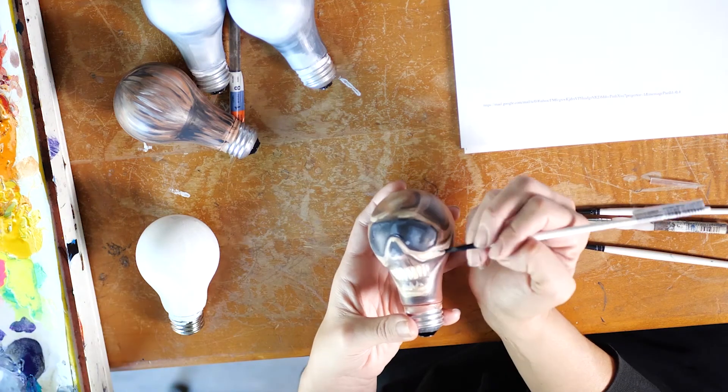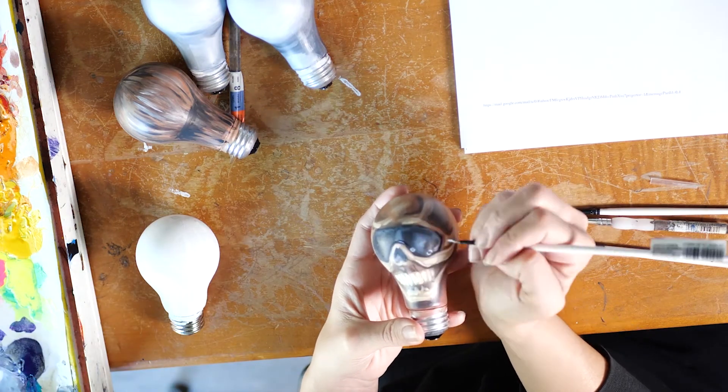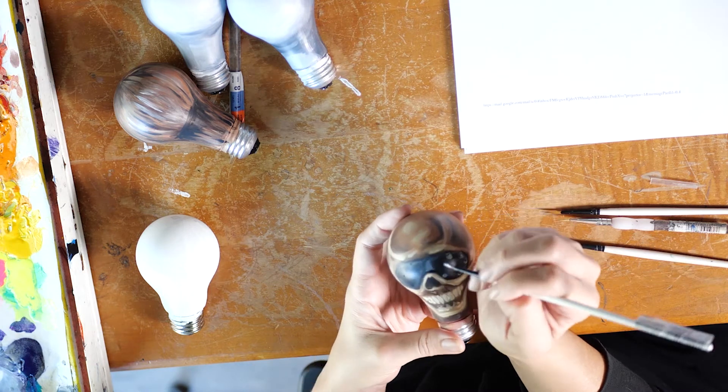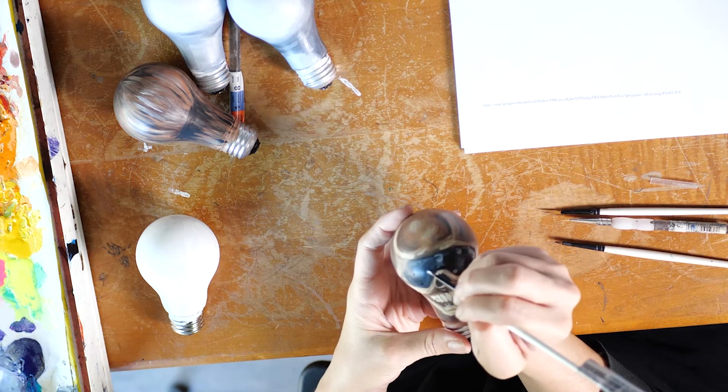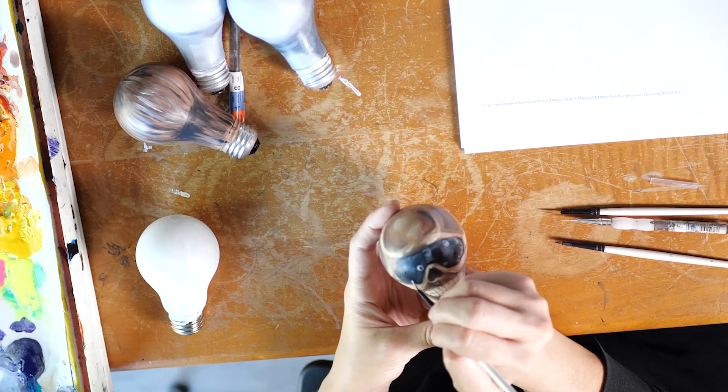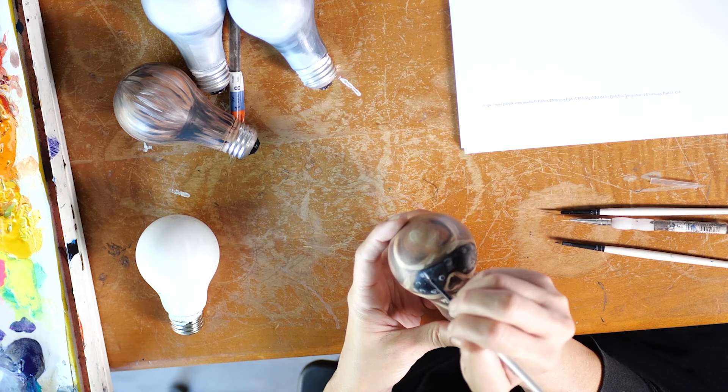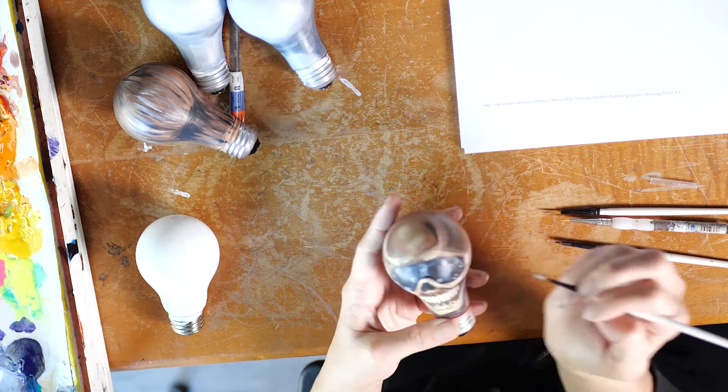Now I'm putting little tiny circles using a liner brush for the dots where the rivets are holding this piece onto his forehead. And I gave a little extra white highlight right along where the bridge of his nose would be if he actually had skin on his face.